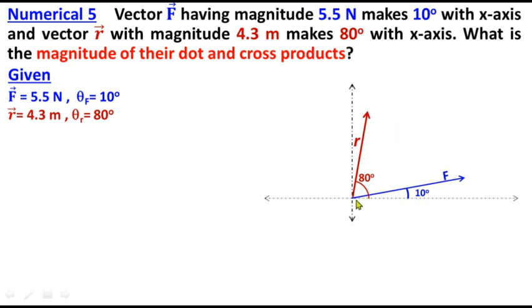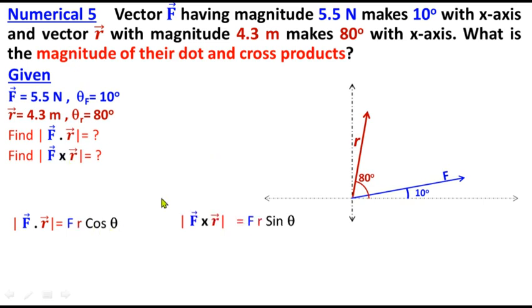This whole angle is with the x-axis, not the angle between vector F and r. We need to find the dot product F dot r, and you know dot product involves cos theta. Similarly, we need to find cross product, and cross product involves sin theta.